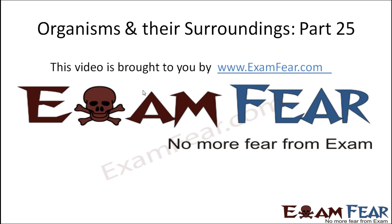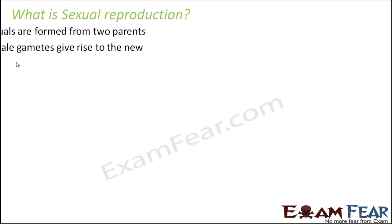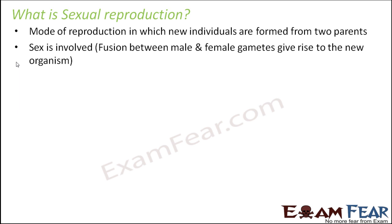Hello friends, this video on organisms and their surroundings part 25 is brought to you by examfear.com. Let us now talk about sexual reproduction. Sexual reproduction is a mode of reproduction in which new individuals are formed from two parents. Whenever we talk about sexual reproduction, two parents are mandatory — you need a mother and a father, so a male and a female need to be involved. What happens overall is there is fusion of the male and the female sex cells.